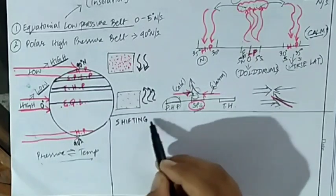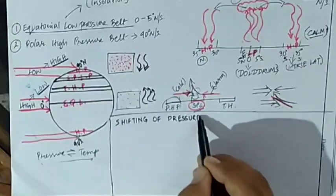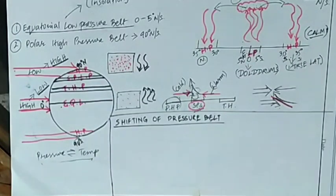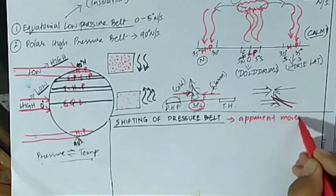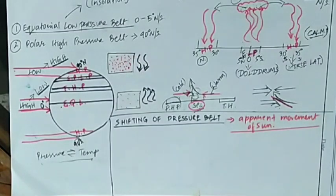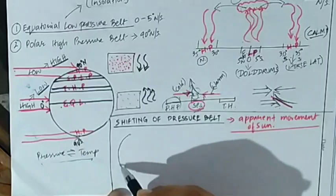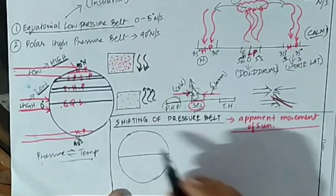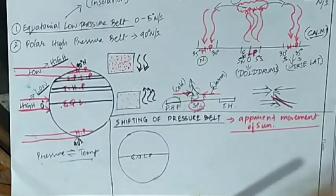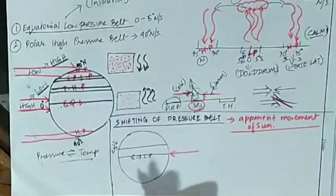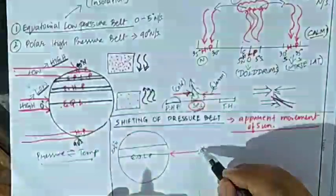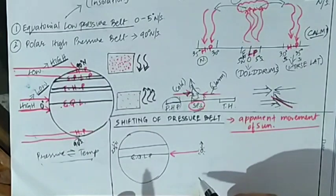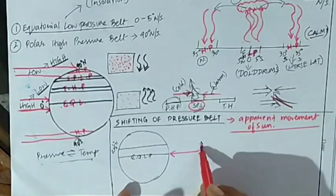So these are the different factors behind the formation of the low and high pressure belts globally. Now we are going to discuss the shifting of the pressure belts. Those pressure belts are not fixed or stationary — they also shift towards the north and the south under the apparent movement of the sun. Now in the equator we know there is a formation of a low pressure belt, and the reason behind it is the direct rays of the sun. The direct rays of the sun lead to the formation of low pressure. This is the tropic of cancer, and the apparent movement of the sun means the movement of the sun towards the north and towards the south.